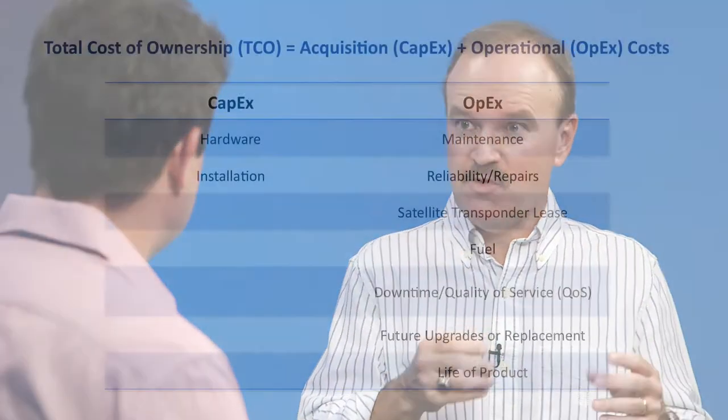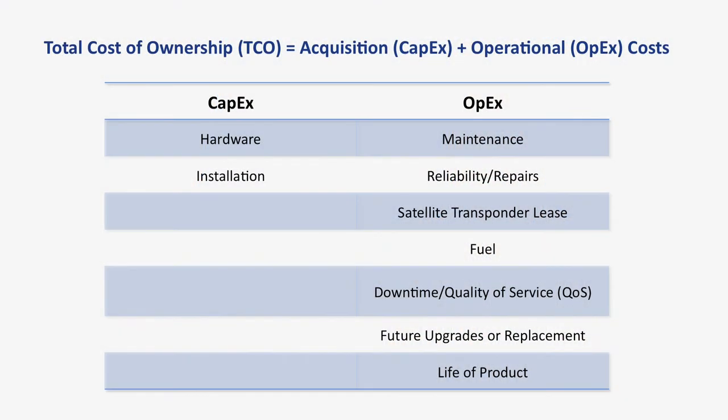So total cost of ownership typically is made up of capital expense, capex, and operational expenses, opex. How are we splitting those up in the in-flight connectivity space? By capex, we mean the one-time items. Those would be purchase of the equipment, installation on the aircraft, perhaps even removal and refurbishment of the aircraft, but just those one-time items.